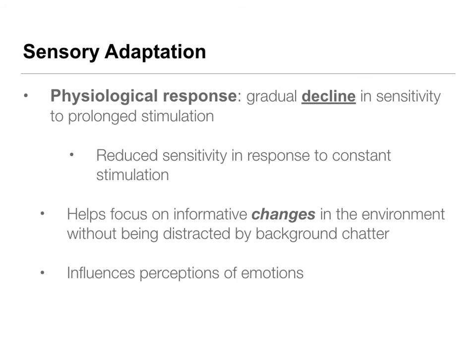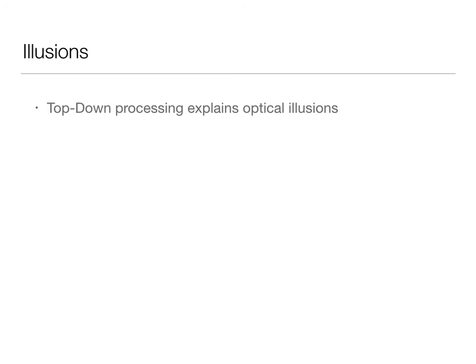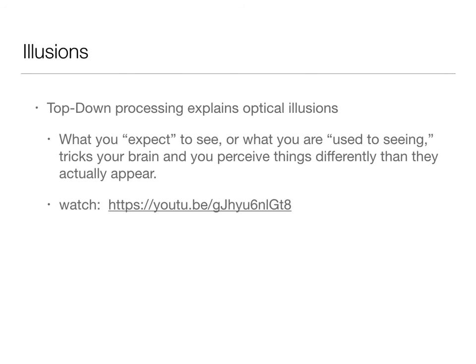Adaptation also applies to emotions - we become adapted to emotions so we can detect changes in them quickly, which is really important for our survival. Top-down processing also explains optical illusions. There's a video linked on iCollege and the YouTube playlist that explains how what we expect to see, or what we're used to seeing, can trick our brains into perceiving things differently than they actually appear. It does a good job of showing how top-down processing affects our visual perception.